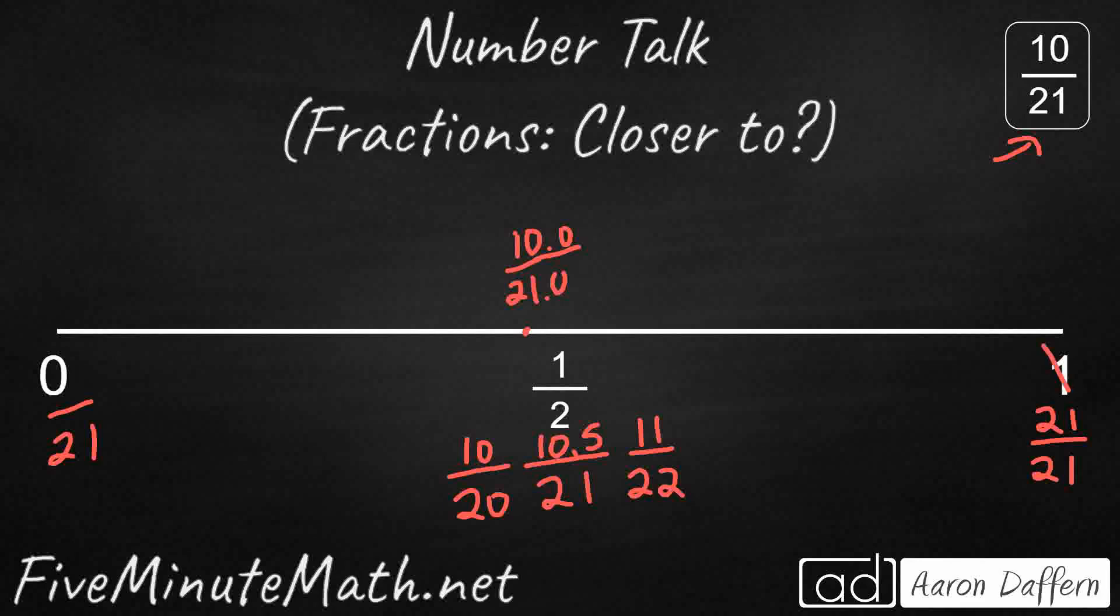Definitely not going to be closer to 1 because it's on the left side or the lesser side of 1 half, my 10.5. And really there's no way it's going to be closer to 0 because it's 10.0 and my half is 10.5. So we can say with confidence that 10 21sts is closest to 1 half.